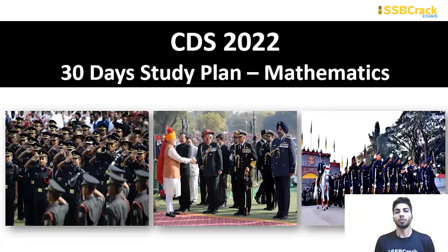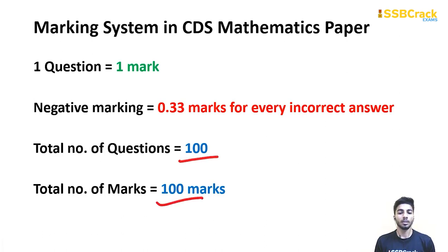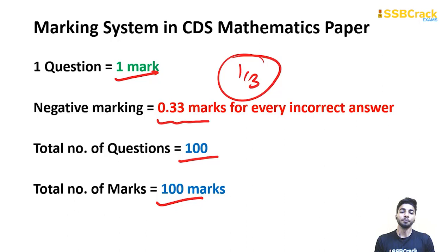First of all, as you know, the marking system in CDS mathematics: there are a total of 100 questions and 100 marks — one question for one mark. There is negative marking also: 0.33 marks, that is 1/3, deducted for every incorrect answer.